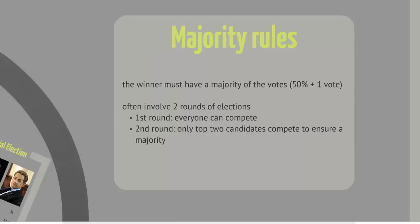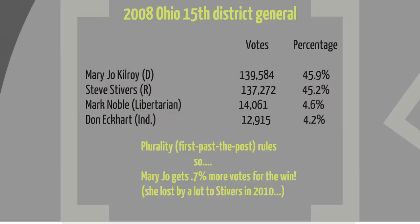Let's look at a couple of examples. Here is the 2008 election in the 15th District of Ohio, which included large parts of Columbus. The Democrat, Mary Jo Kilroy, won only 0.7% more of the vote than her Republican competitor, Steve Stivers. However, because of the first-past-the-post rules, she won the seat. Of course, in the 2010 election, Stivers beat her by enough of a margin that he could have won under majority rules.